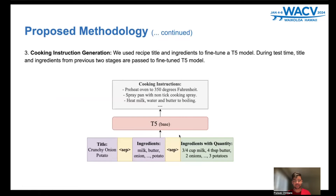This is the T5 model. As input, we have the title, ingredients, and ingredients with quantity, and then we pass it to T5 to obtain cooking instructions. Please note that during test time, we do not have the ingredients with quantity, and still the model performs well.